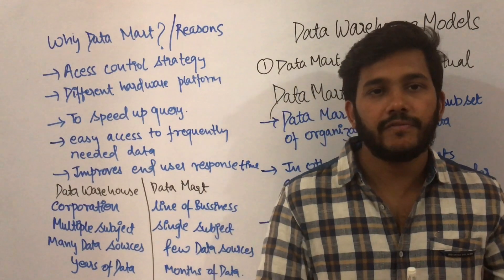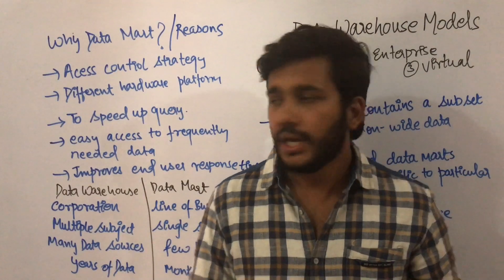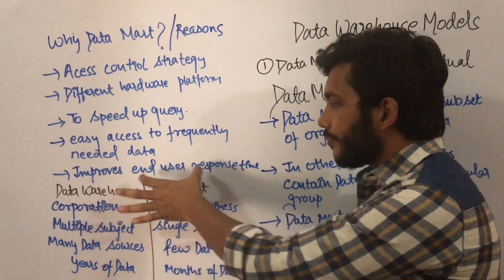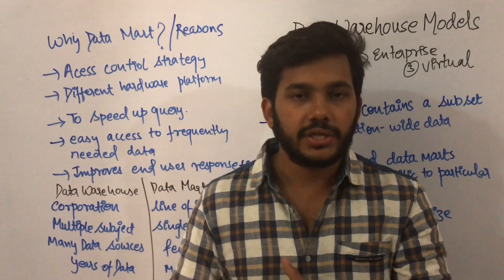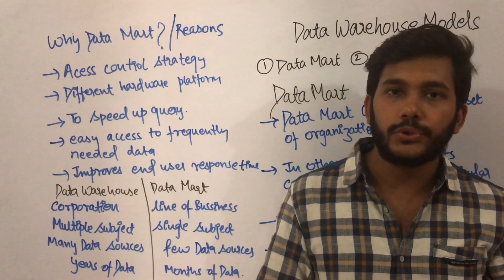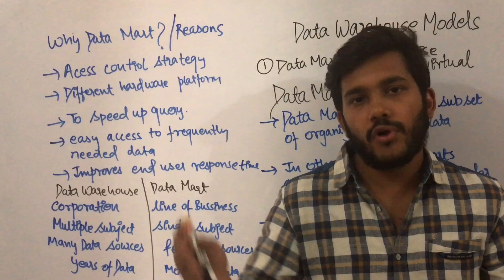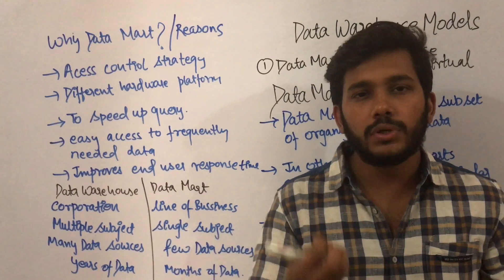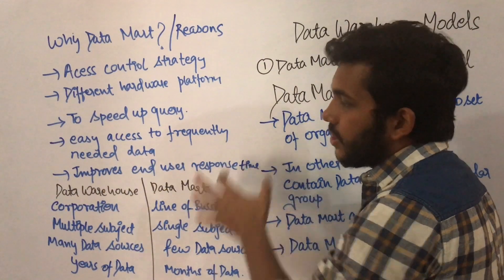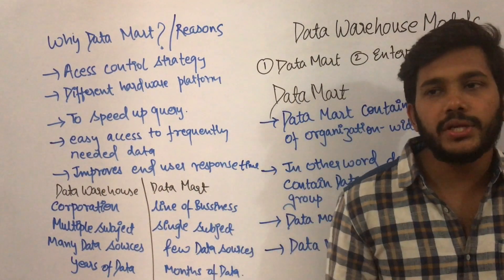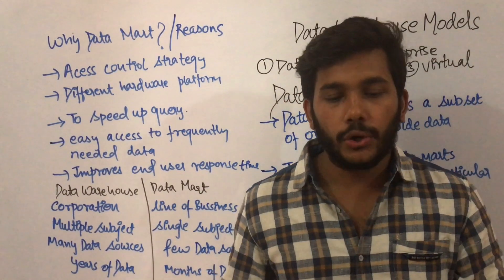For example, suppose you want to search for the total number of placements from the computer science department. It will be easy because you only need to derive results from the computer science branch. Suppose there were 200 students in the computer science department and only 50 got placed - searching results from 200 records gives you the result in very quick time. So it improves the end user response time.